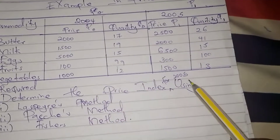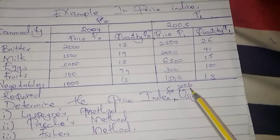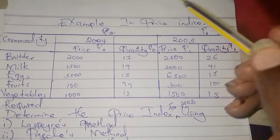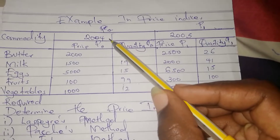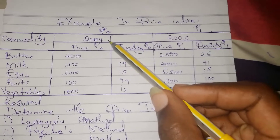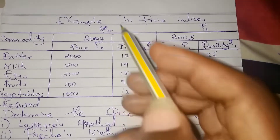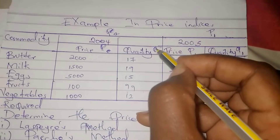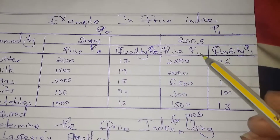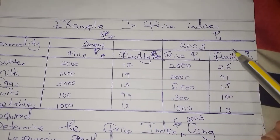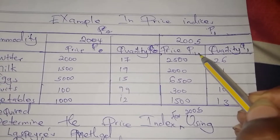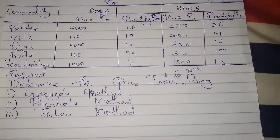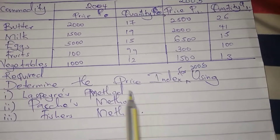They want us to calculate for 2005, meaning 2005 is the current year, so it will be our p1 and q1. The remaining year, 2004, becomes the base year, so prices in 2004 become p0 and quantities become q0. Prices in 2005 are p1 and quantities are q1.